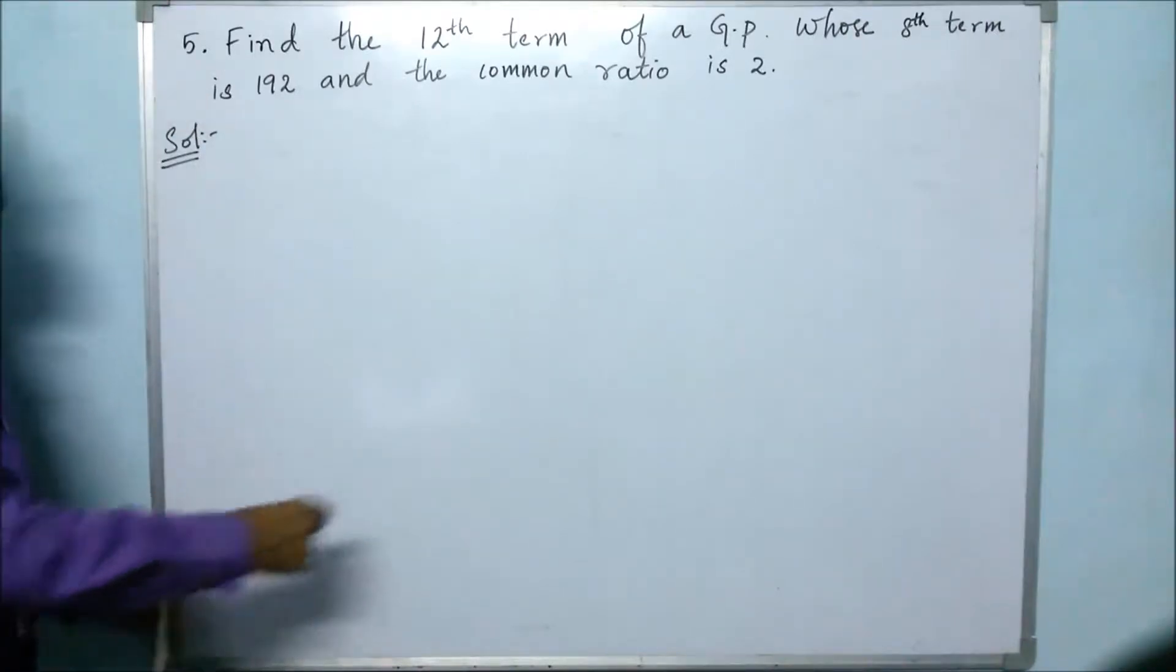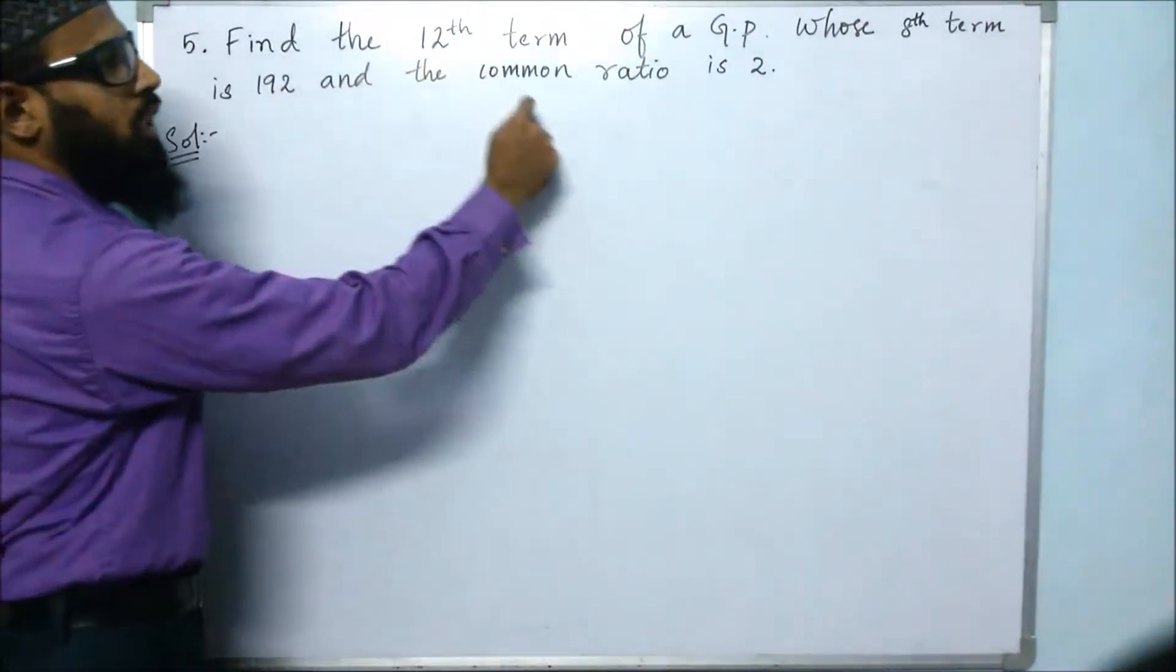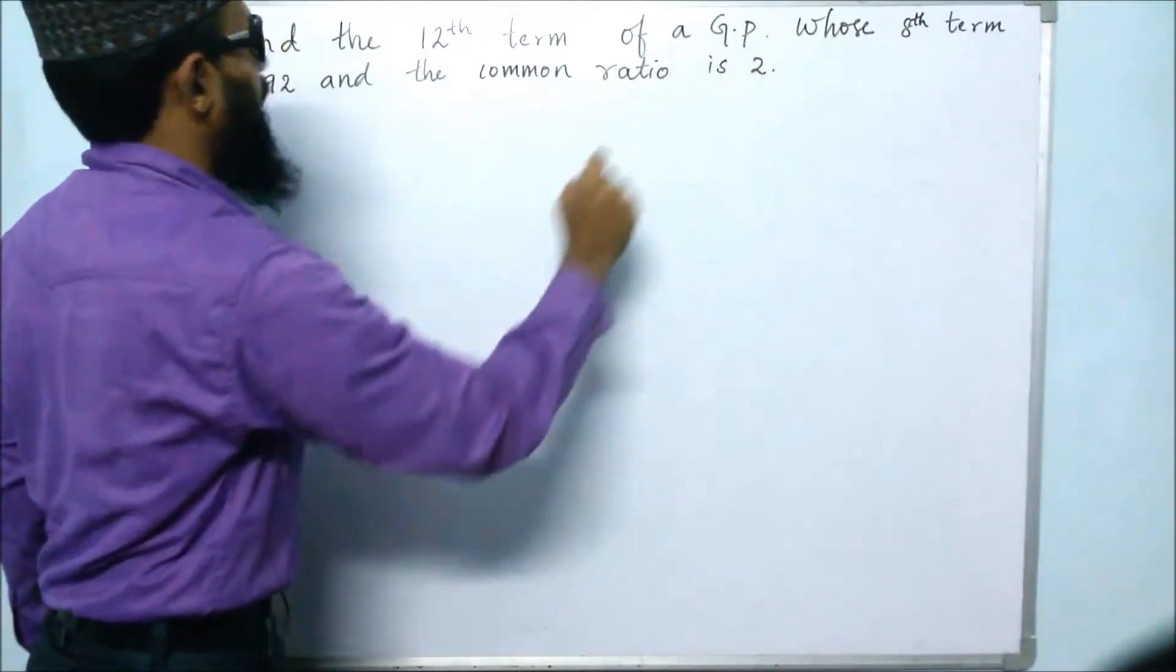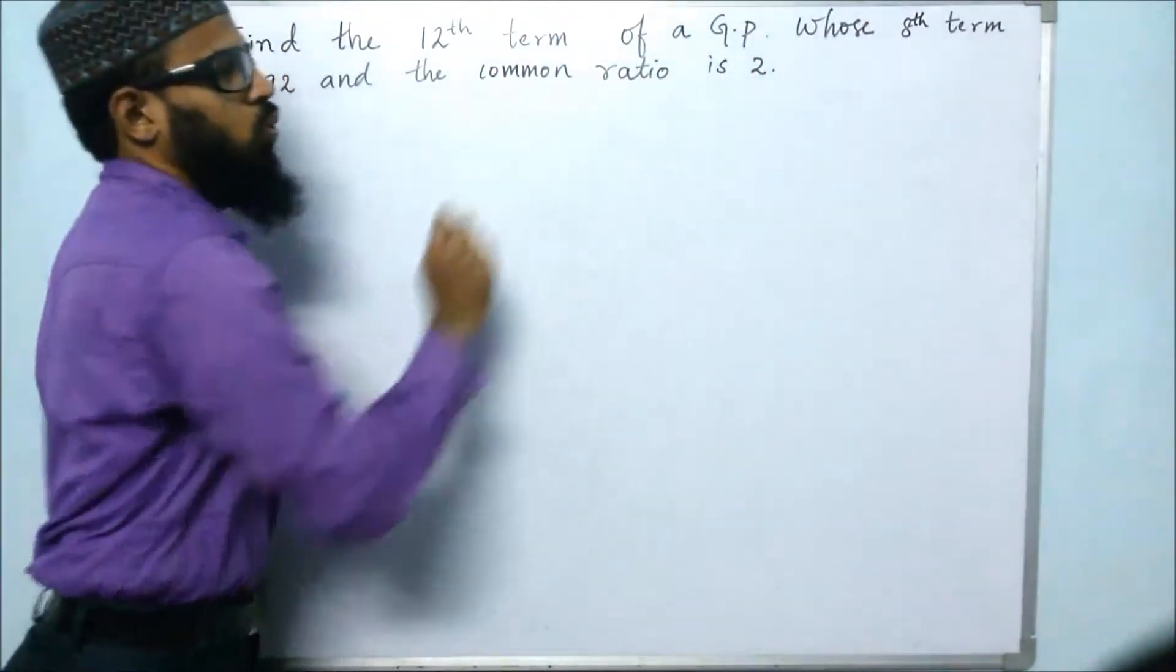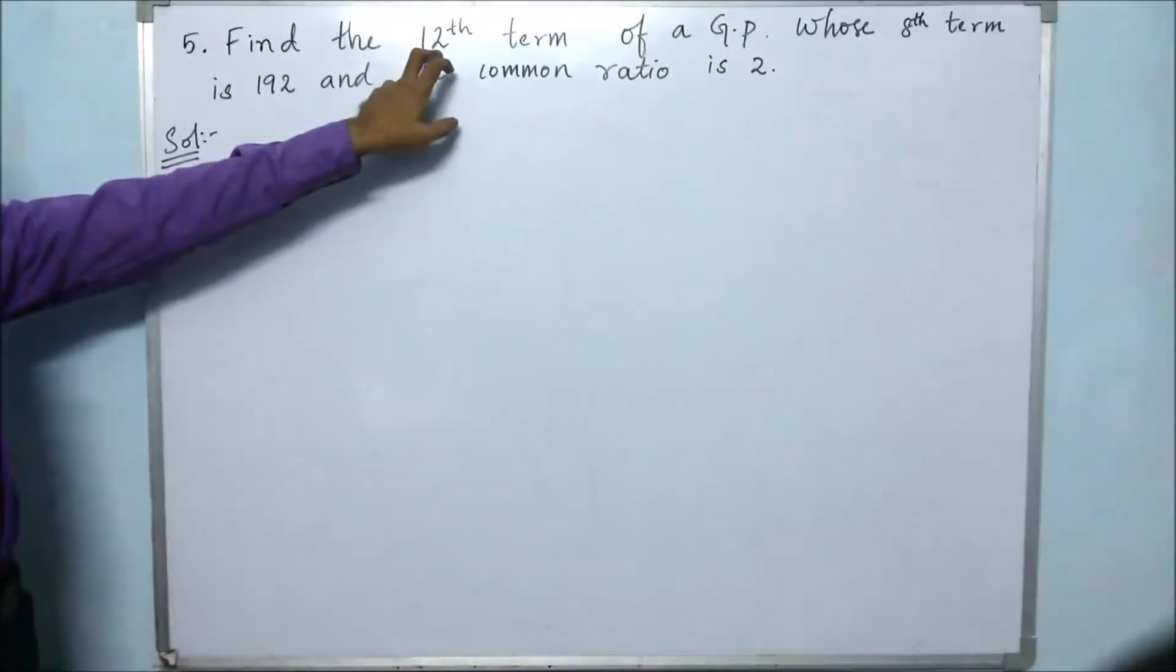This is the fifth problem. Find the 12th term of a GP whose 8th term is 192 and the common ratio is 2. So we have to find the 12th term.